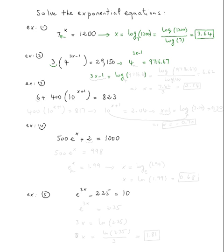What is the base? The base is four. The exponent is three x minus one. So we write log base four of nine thousand seven hundred sixteen point sixty-seven. We don't have log four in the calculator, so we have to use the change of base formula, which is log of nine thousand seven hundred sixteen point sixty-seven divided by log four. If you use your calculator, you're supposed to get six point sixty-two.